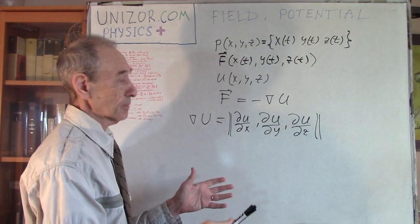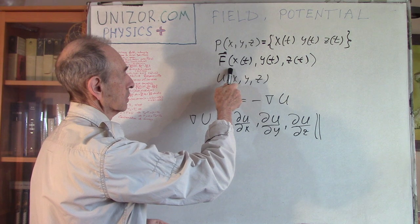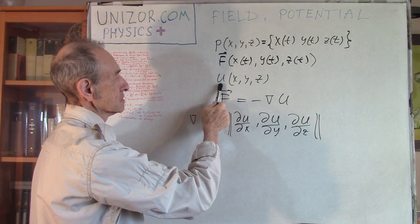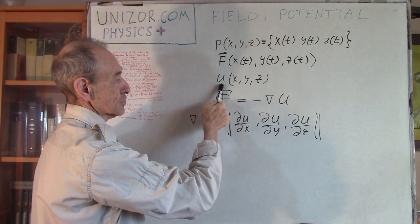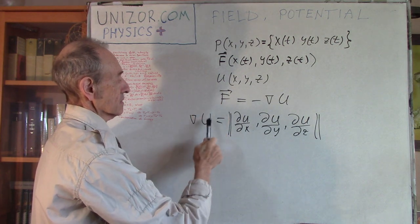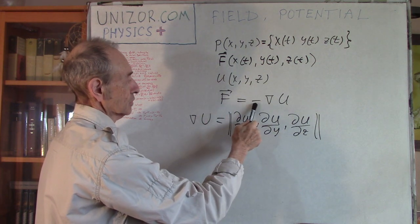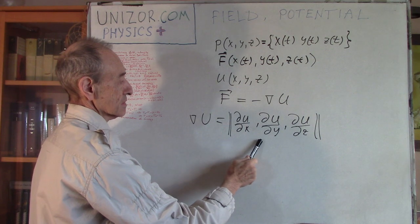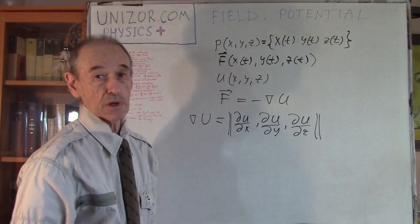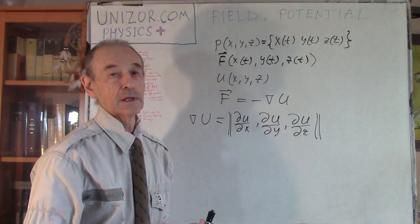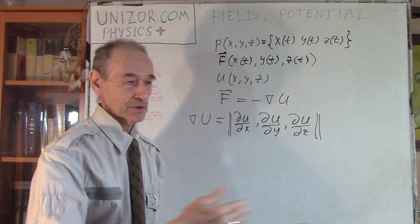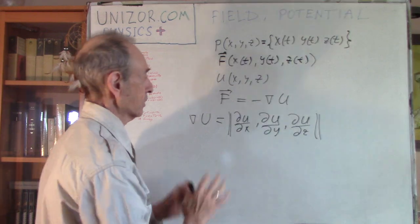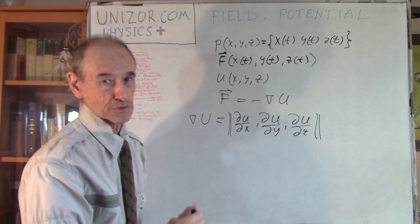Let me repeat: a field is an area where at each point you have a certain vector - the force vector - and at each point there is a scalar function called a potential, and the value of the force vector equals negative NABLA of the potential. That is the definition of the field.